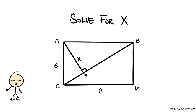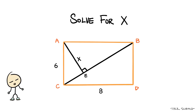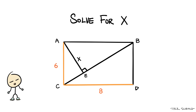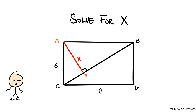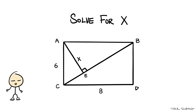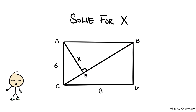I've got a quick geometry quiz to keep your mind sharp. If this rectangle ABCD has a length of 8 and a height of 6, can you solve for X? Keep in mind, the line segment AE is perpendicular to the diagonal line segment BC. I'll give you guys a few minutes before I give you a hint.